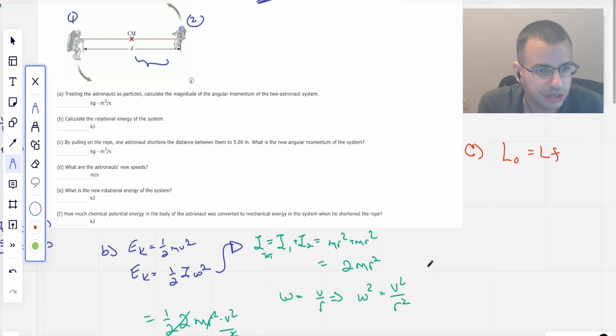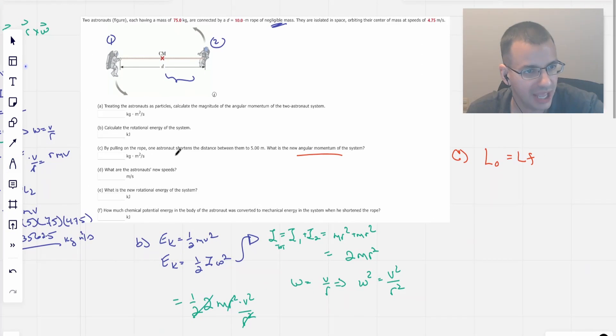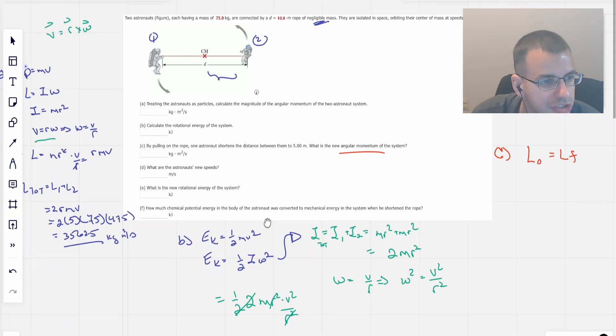So that's going to be exactly the same. Angular momentum is not going to change here by the astronaut pulling on the rope. So the answer to part C is going to be the same answer as part A, which is going to be 3562.5.